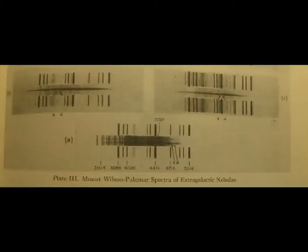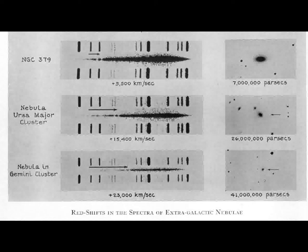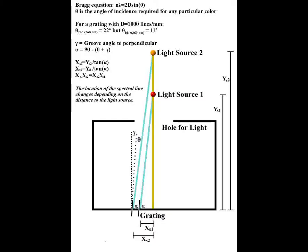An expanding universe seems unlikely. The supposed red-shifted calcium absorption lines may be a mistaken observation, because spectrum size changes the position of spectral lines—as clearly shown in the 1936 Humason photo—and because the distance of a light source changes the position but not the frequency of spectral lines.